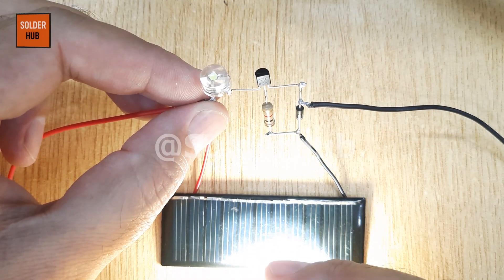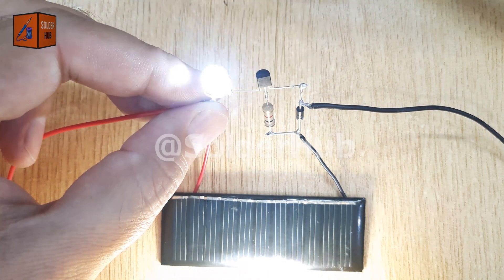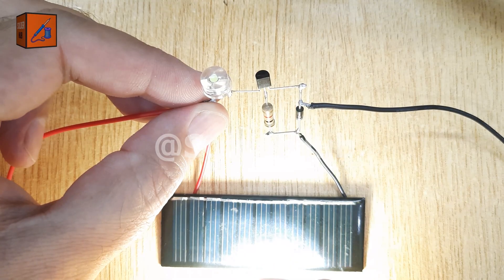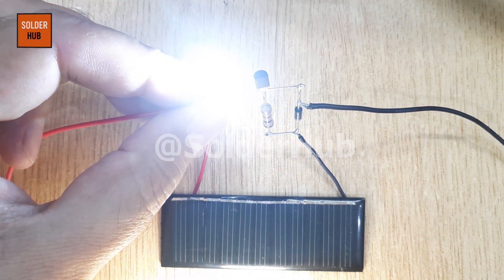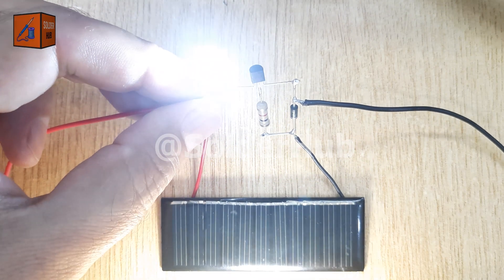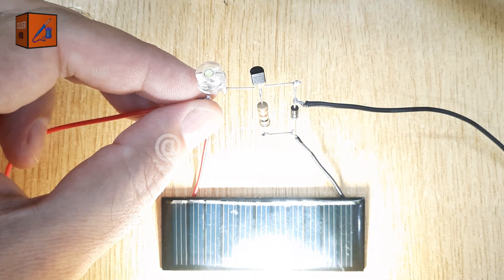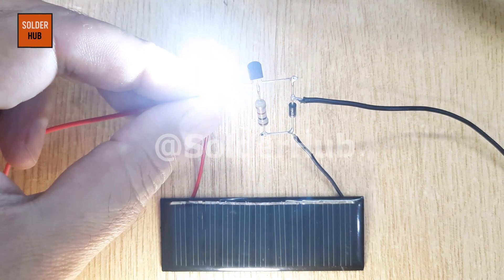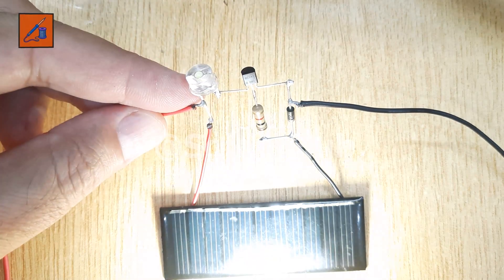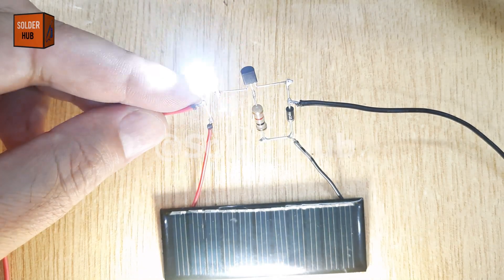With just a few components—a transistor, diode, resistor, LED, and a solar panel—you can create a smart energy-saving light system. If you want to learn how automatic lights around your streets and homes work, this is the perfect project to start with. It's simple, practical, and really useful in the real world.